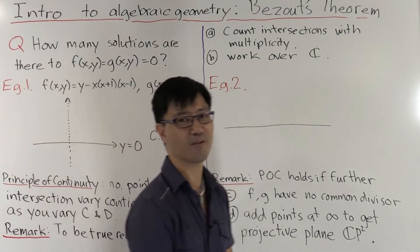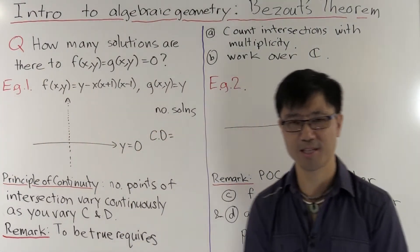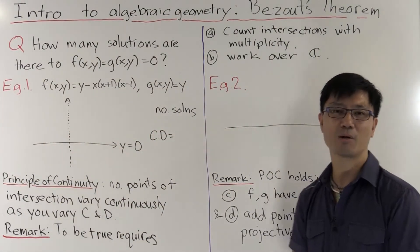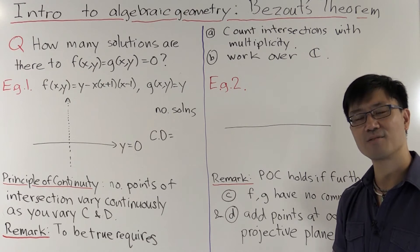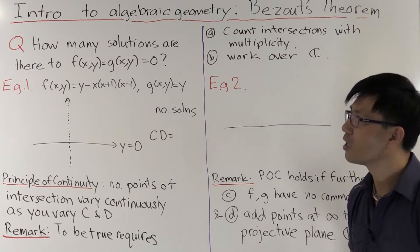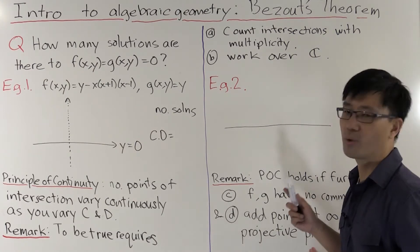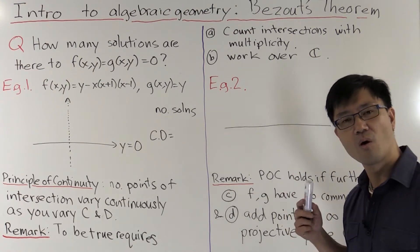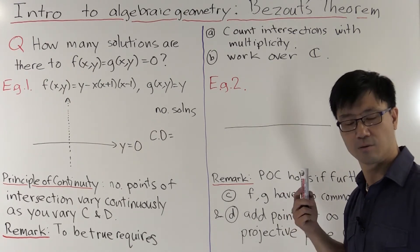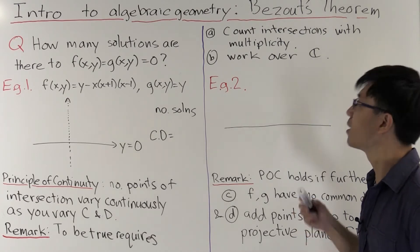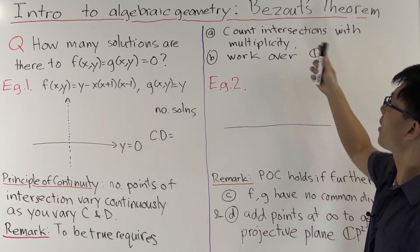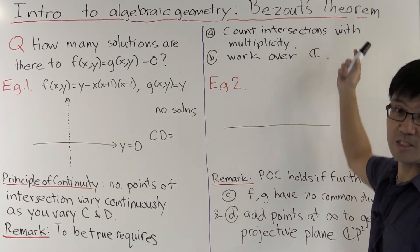Hi, I'm Daniel Chan from the University of Western Sydney. Welcome to my Adventures in Pure Mathematics series. Today, I want to talk about one of the oldest results in algebraic geometry, and it goes by the name of Bezout's theorem.